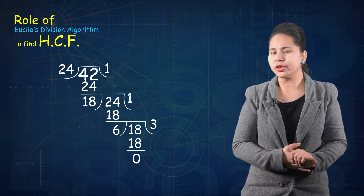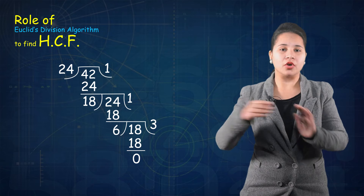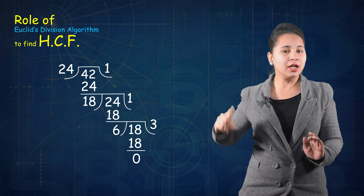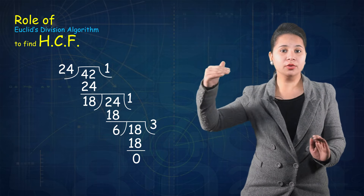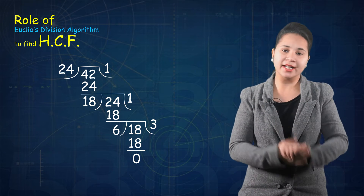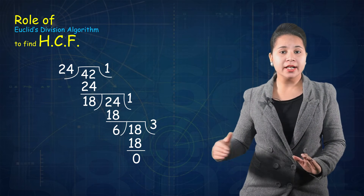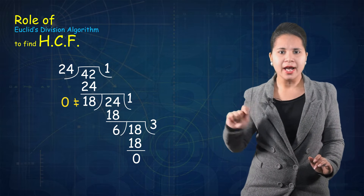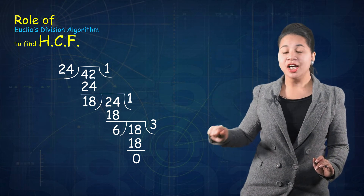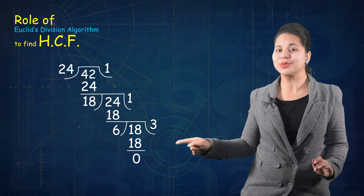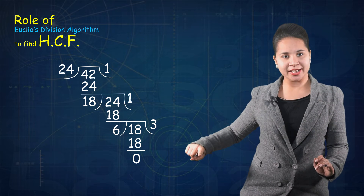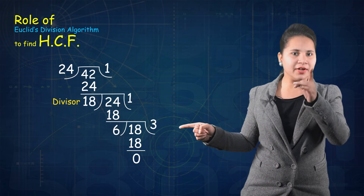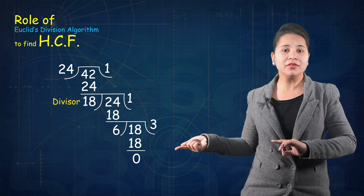For example, take 24 and 42. If we divide 24 into 42, how many times does it go? One time. So 24 once is 24. Now subtract 24 from 42, which gives 18. The remainder is 18, which does not equal 0. Since the remainder is not 0, the division process is further proceeded. So 18 becomes the new divisor, and 24 becomes the new dividend.